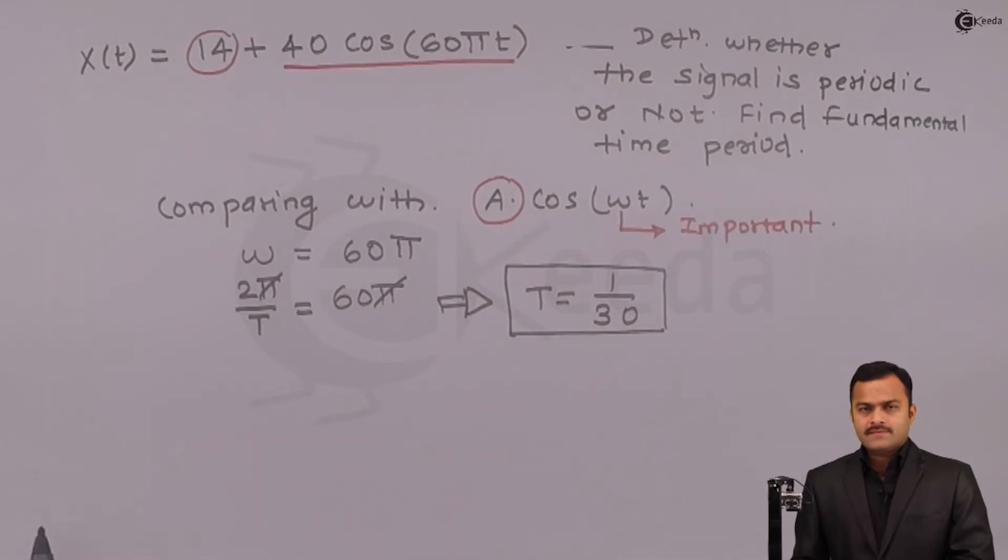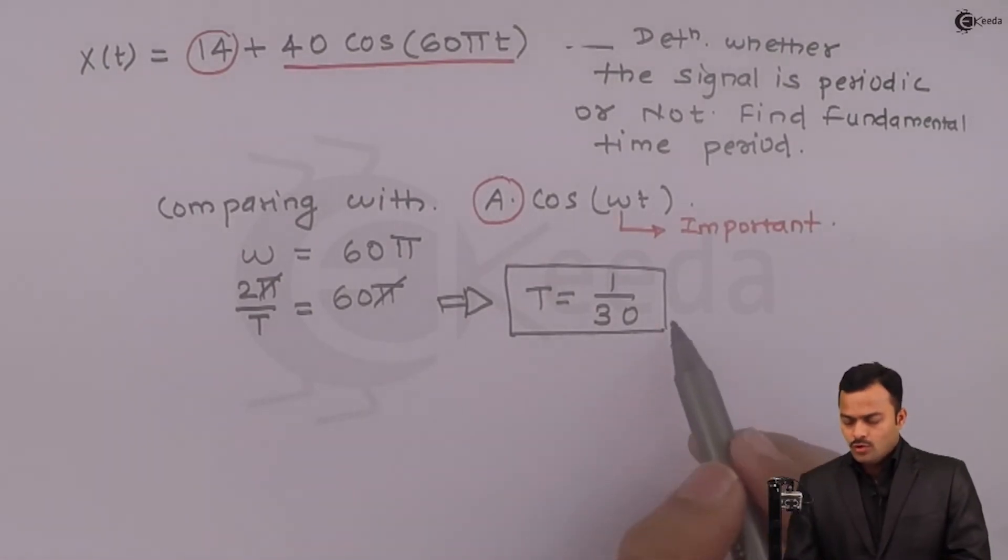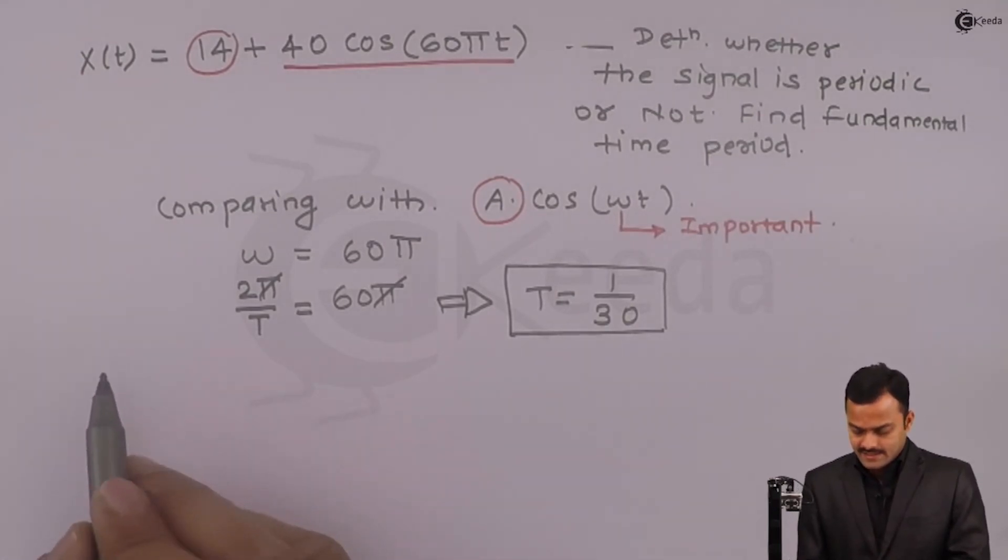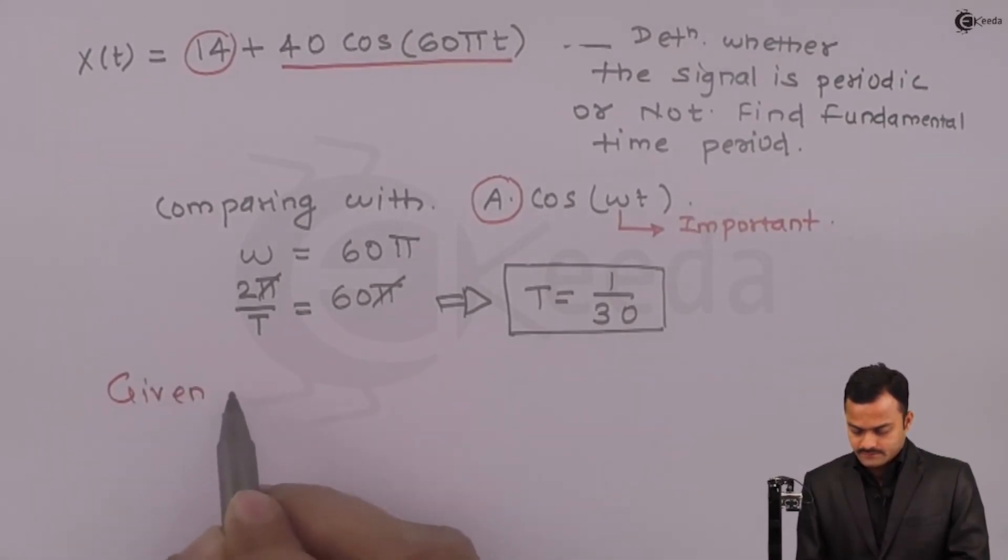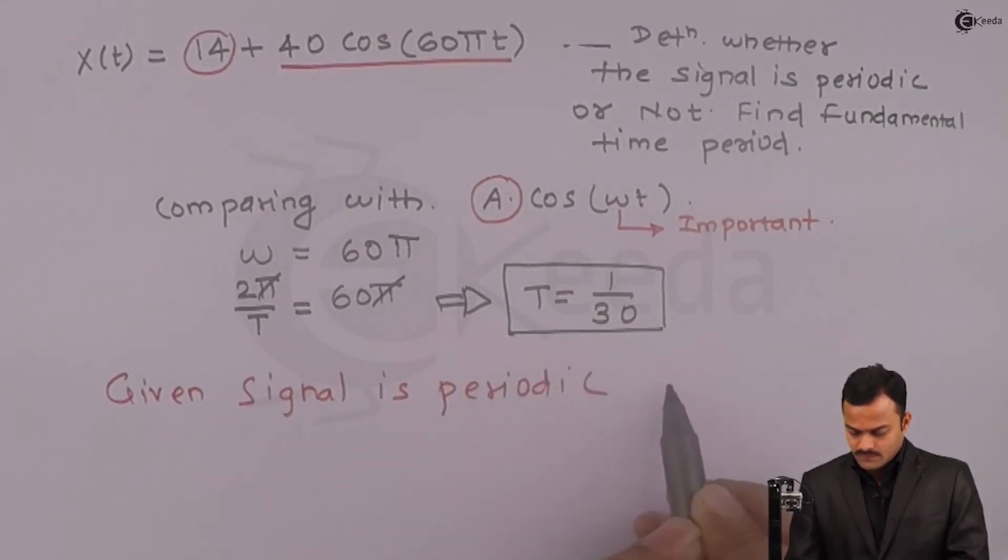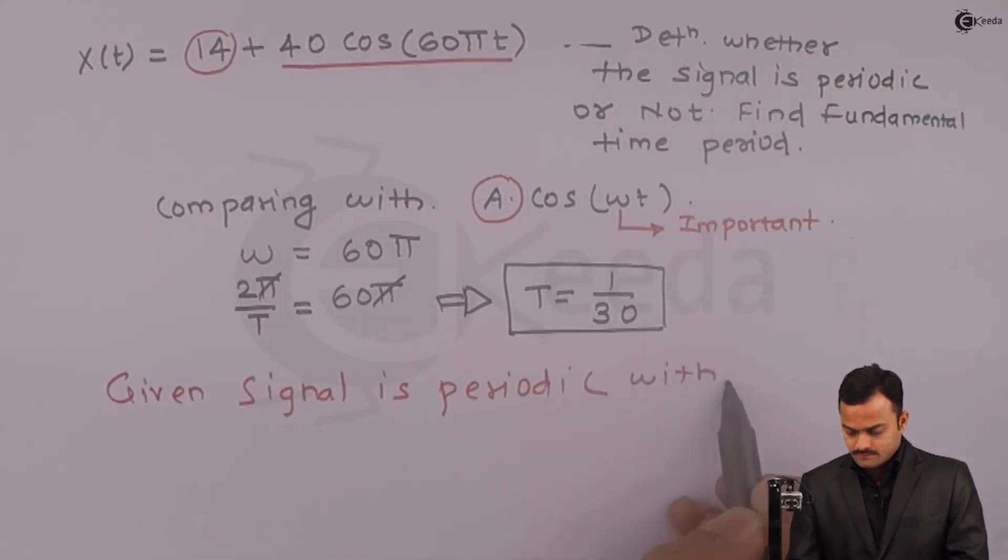For a continuous time signal, there is no extra check to verify whether the signal is periodic or not, meaning it will always be periodic for any value of T. Hence I can say the given signal is periodic with fundamental time period.